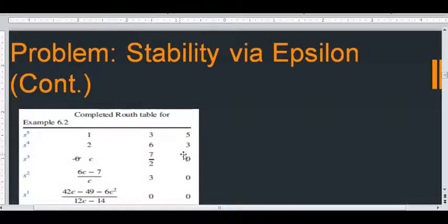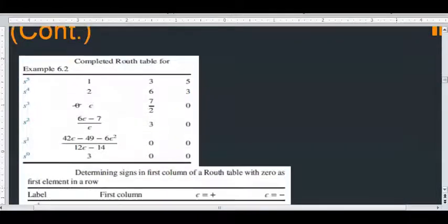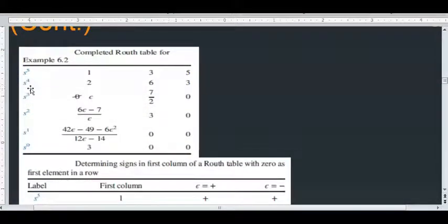The Routh stability criteria first step is to generate the Routh table. First, you write on the left half side starting with the highest degree of the denominator, s5 in this case, all the way down to s0. Second, you put the coefficients from the denominator polynomial: 1, 3, and 5 for s5, s3, and s1, and 2, 6, and 3 for s4, s2, and s0.